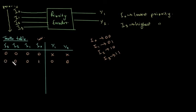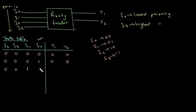I0 corresponding output is 0, 0. Next, I1 is active, I2 and I3 are 0, and I0 is lowest priority. So I1 corresponding output is 0, 1.